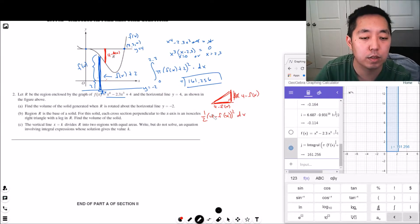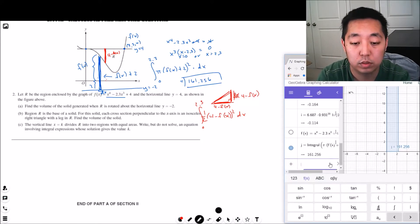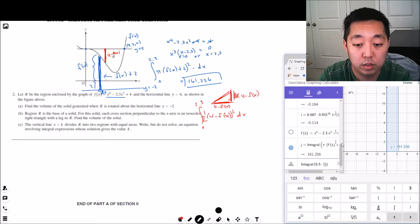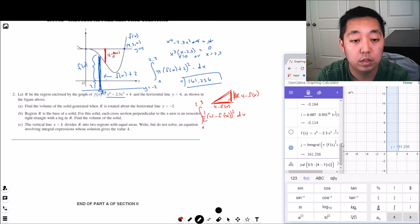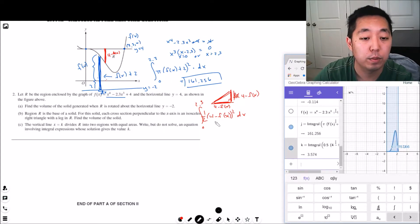Times dx, that gives me the volume. Then I want to integrate from 0 to 2.3. Use the integral sign thingy. Integral from 0 to 2.3. 3.574.